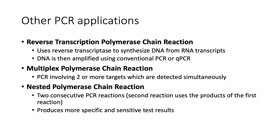We also have other PCR applications. First, we have reverse transcription polymerase chain reaction, or RT-PCR. This uses the enzyme reverse transcriptase to synthesize DNA from RNA transcripts; the DNA is then amplified using conventional or qPCR. RT-PCR is very useful for gene expression studies. Next, we have multiplex PCR, which is a PCR involving two or more targets detected simultaneously. These targets can be different species or different genes.